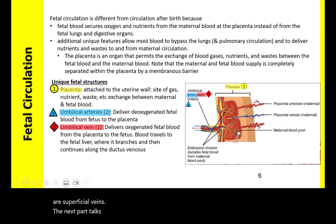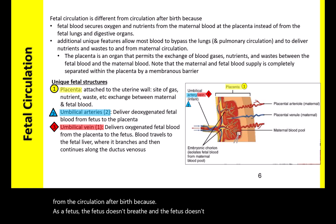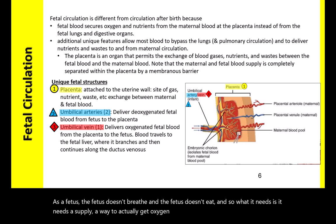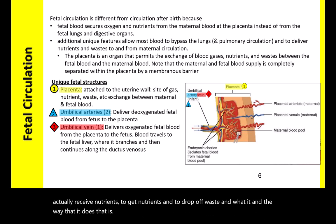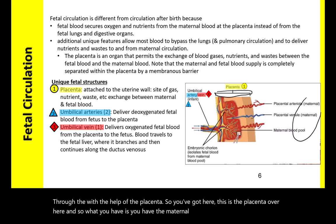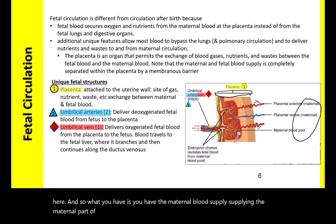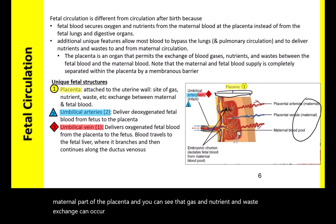The fetal circulation is quite different from post-birth circulation because the fetus doesn't breathe and doesn't eat. It needs a way to get oxygen and drop off CO2, as well as receive nutrients and eliminate waste. This is accomplished with the help of the placenta, where the maternal blood supply is in close proximity to the fetal blood supply, allowing gas, nutrient, and waste exchange.